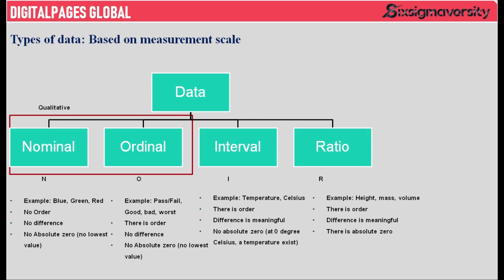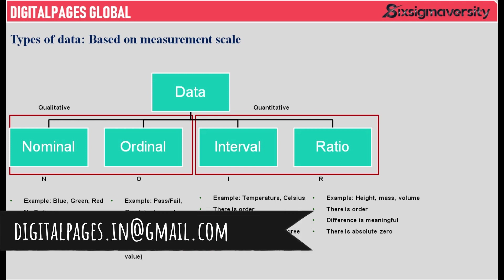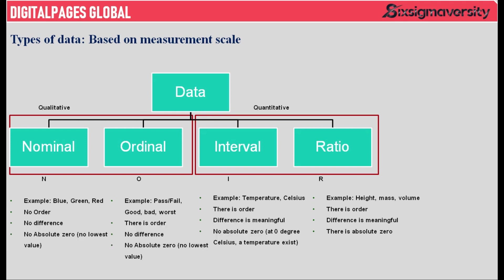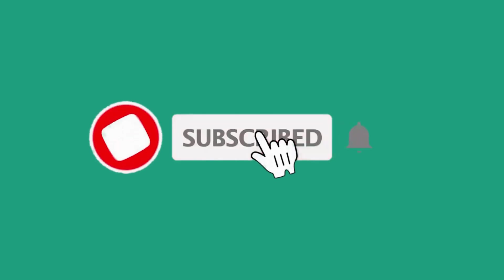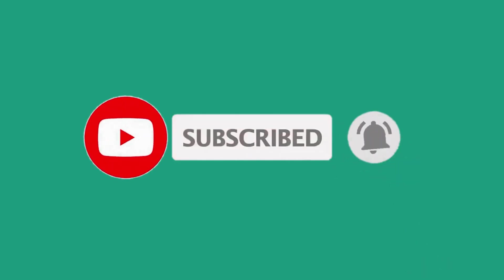To summarize, nominal and ordinal are qualitative data. Interval and ratio are quantitative data. If you're looking for certifications, please drop me an email at digitalpages.in@gmail.com. If you want to learn more on Six Sigma, project management, agile, business consulting, please subscribe to my channel and hit the notification button.